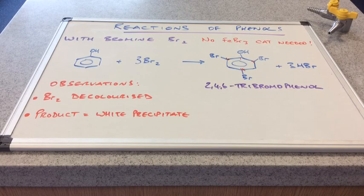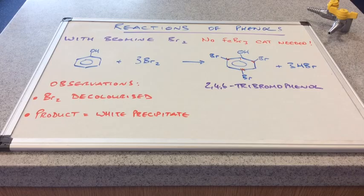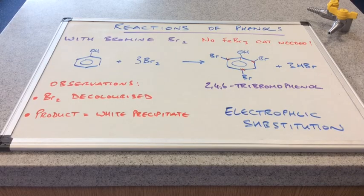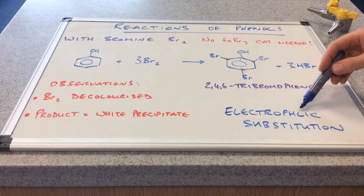The bromine is actually acting as an electrophile in this reaction. And so it's electrophilic substitution. And remember, please, there's only one L there.